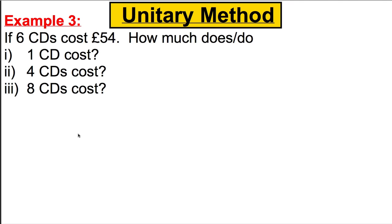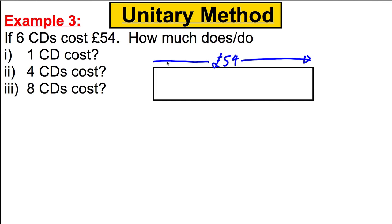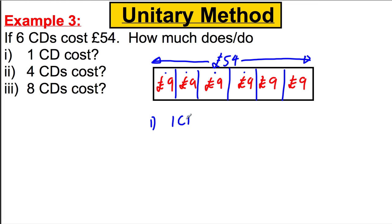One more example, then a few for you to do yourself — copy this down. Six CDs cost fifty-four pounds. Let's draw a picture — all of them together cost fifty-four pounds, and we've got six of them, so we split into six. Could it be ten? Ten, twenty, thirty, forty, fifty, sixty — no, too big. Let's go for nine — nine, eighteen, twenty-seven, thirty-six, forty-five, fifty-four. Nine works.